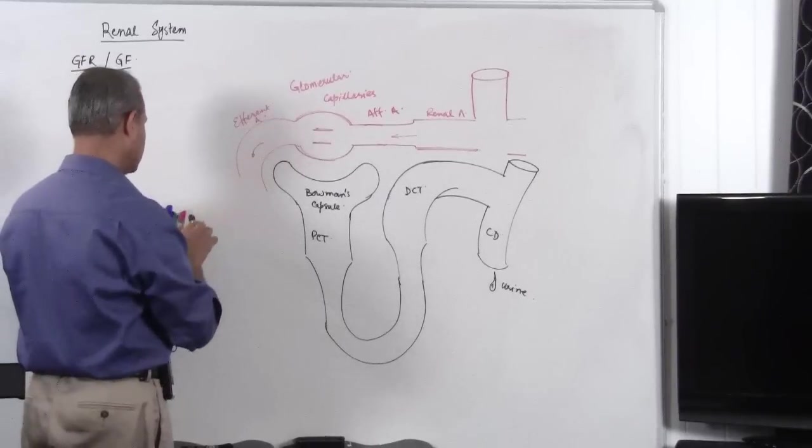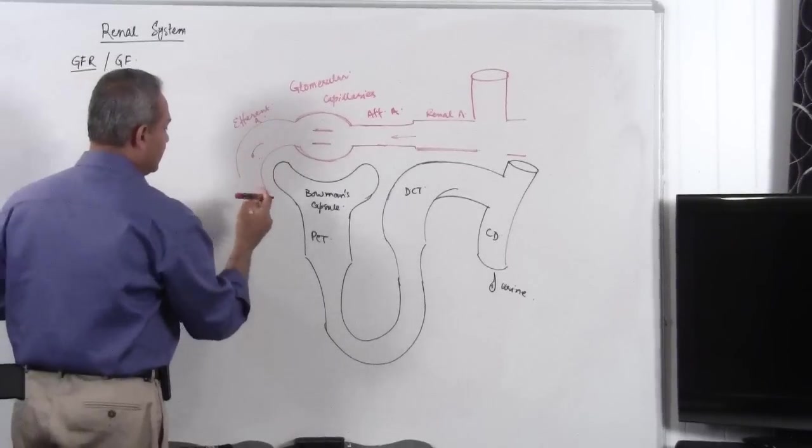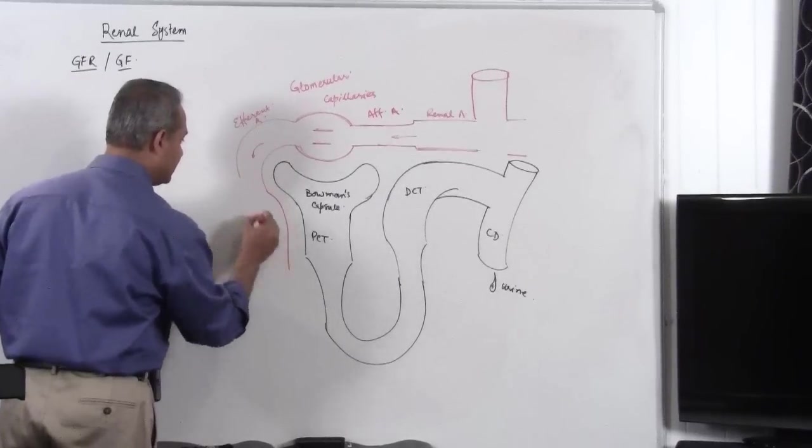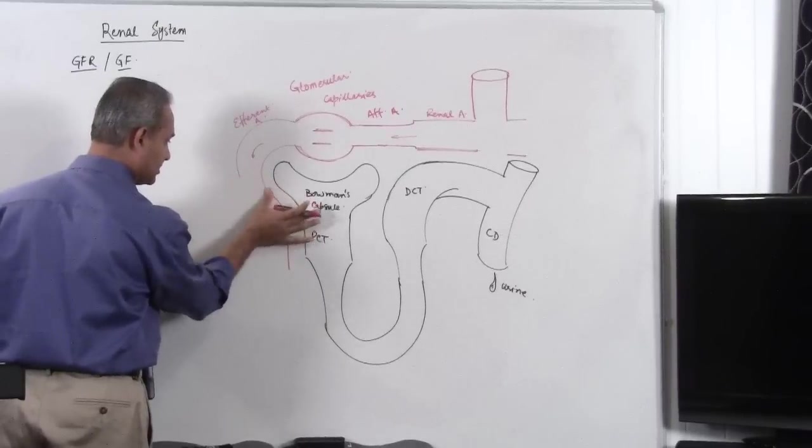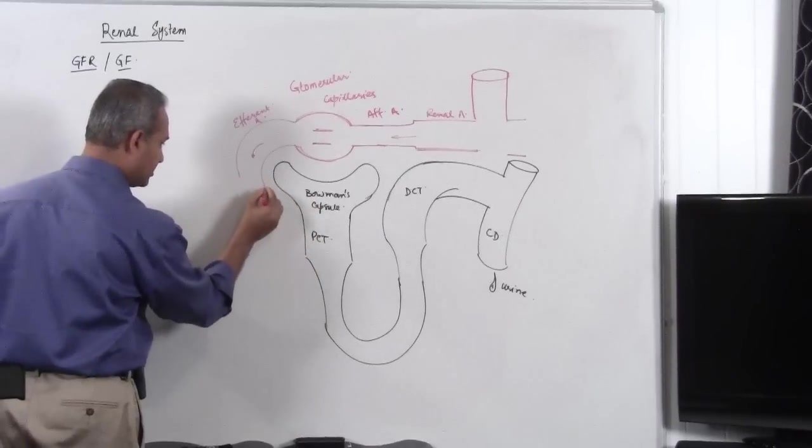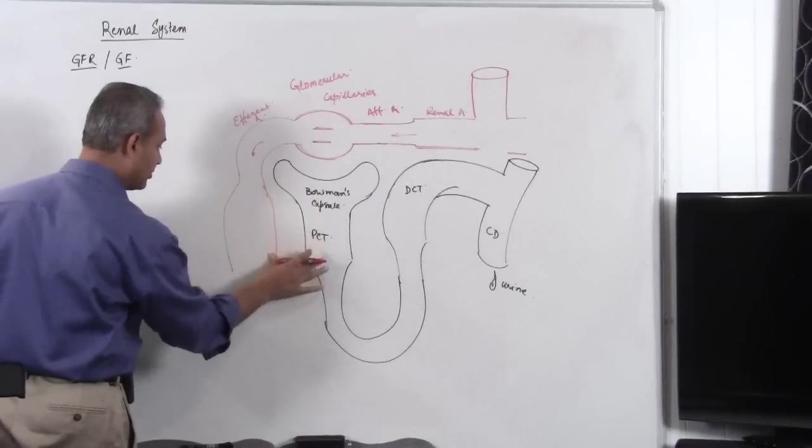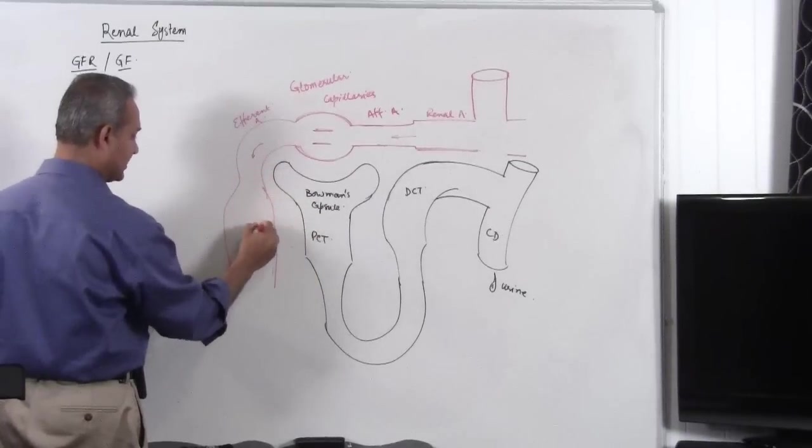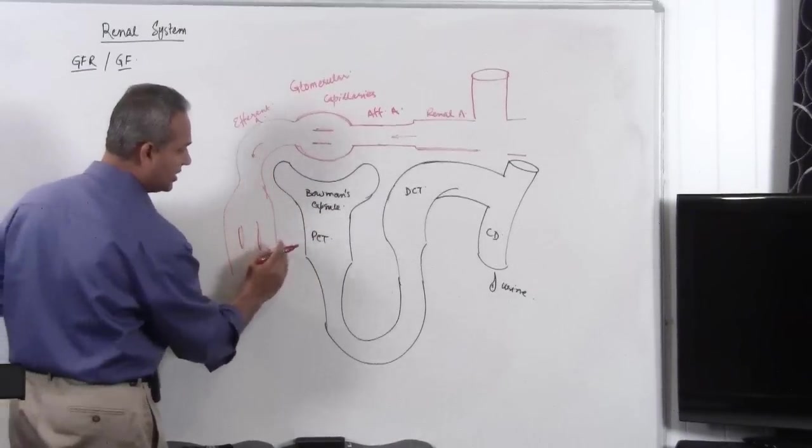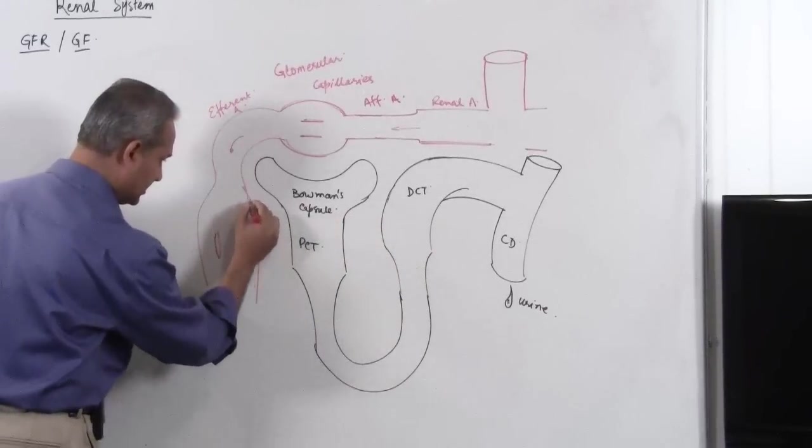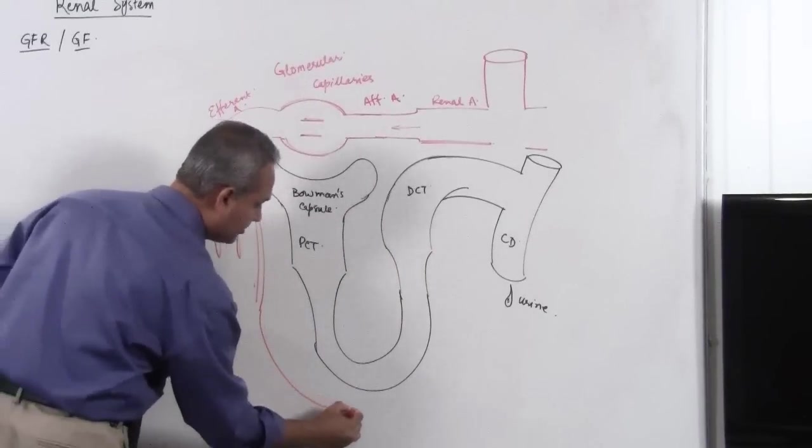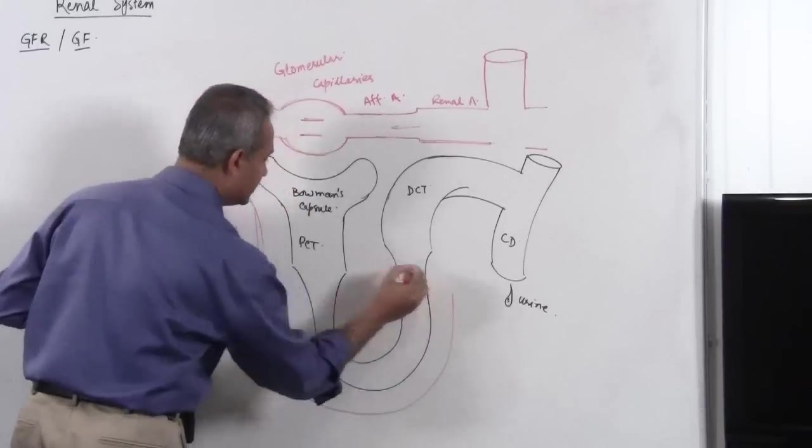Now coming back here continuing with our, so we have peritubular capillaries, make a little bit of peritubular capillaries. So the efferent arteriole divides again into capillaries which are around the tubule, the nephron. So that is why these are called peritubular capillaries.